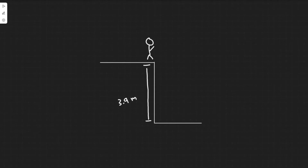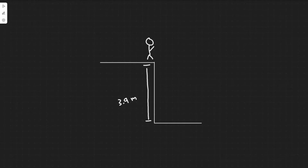In this problem we're told a person jumps from the roof of a house 3.9 meters high. When he strikes the ground below, he bends his knees so that his torso decelerates over an approximate distance of 0.7 meters. If the mass of his torso, excluding legs, is 42 kilograms, find A: his velocity just before his feet strike the ground, and B: the average force exerted on his torso by his legs during the deceleration.